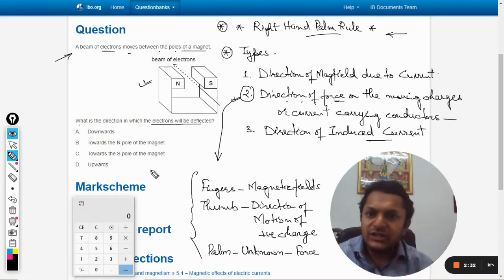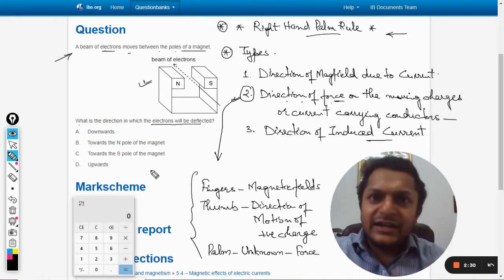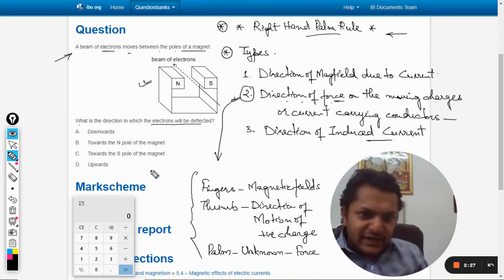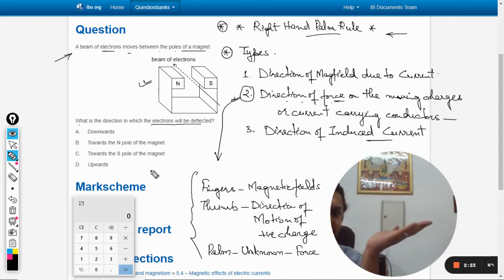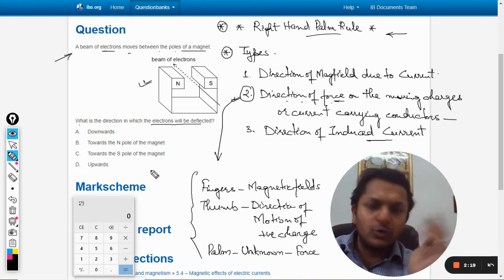You just imagine that this magnet is placed on your table. Just imagine that it's placed here and then you just try to point your fingers accordingly. So my fingers will be in this direction, that is towards right. My fingers will be towards right.